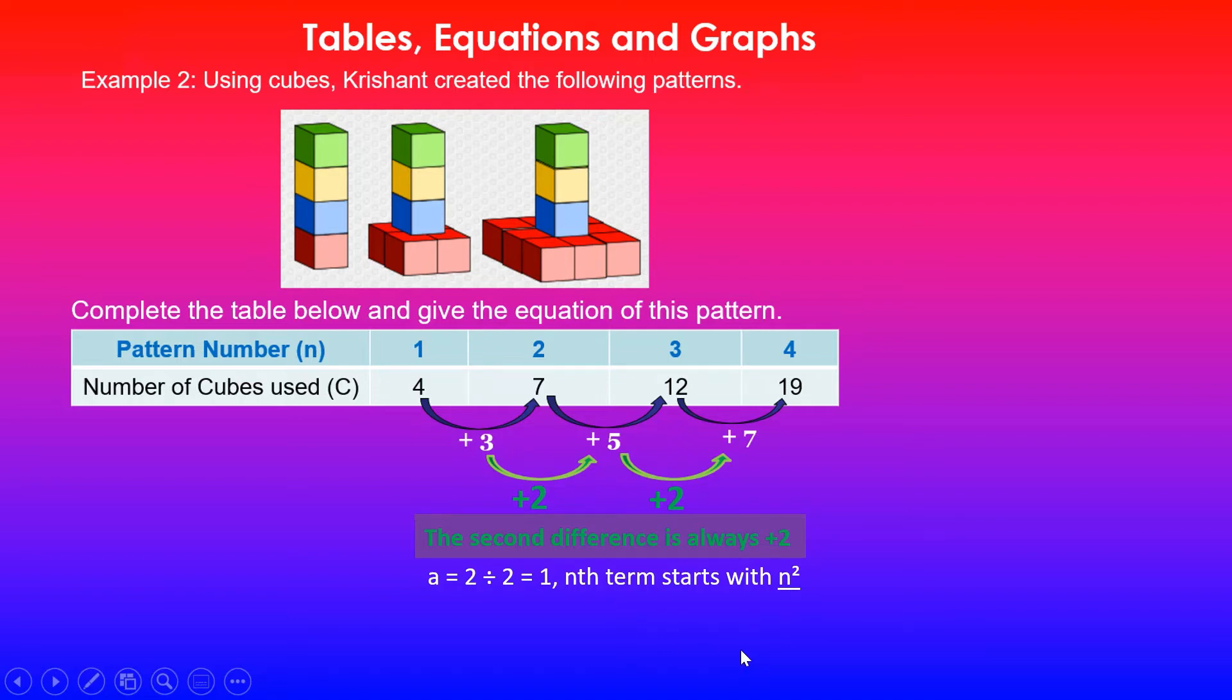This will give you n squared, and the sequence for n squared is 1, 4, 9, 16. How I got this: just substitute n by 1, 1 squared is 1, then change it to 2, 2 squared is 4, then 3, 3 squared is 9, and so forth. So you'll get this pattern.